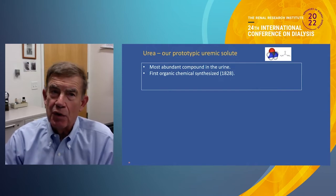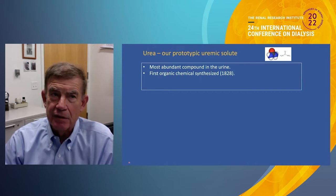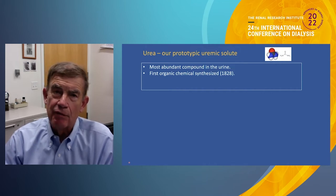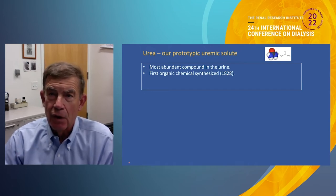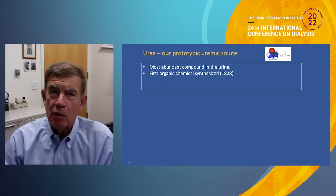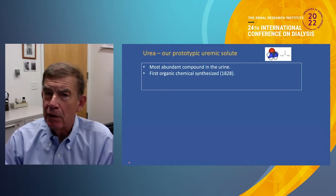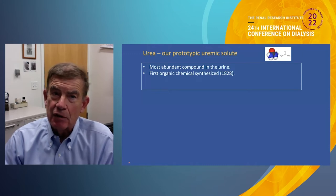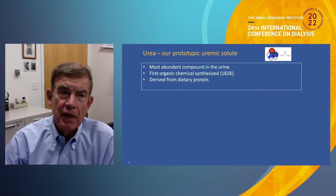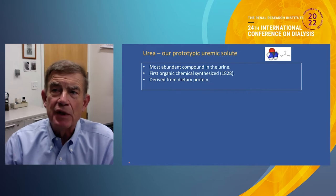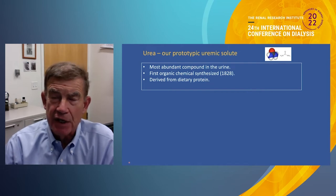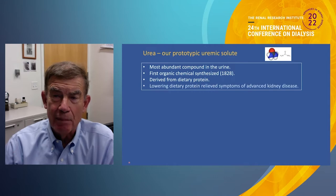I move on to urea, which is where we begin any talk on solute clearances by dialysis. It's our prototypic uremic solute — a chemical that's normally removed from the body by the kidneys, and therefore builds up in the body when the kidneys fail. Why is it our prototype? It's the most abundant compound in human urine. It was the first organic chemical to be synthesized, in 1828. It's derived from dietary protein, and there is a slightly better reason to use it than its simple abundance as an index of replacement renal function.